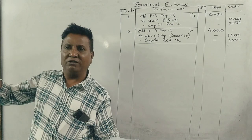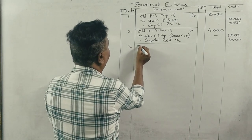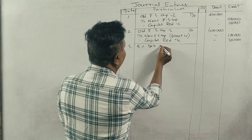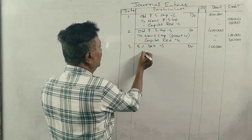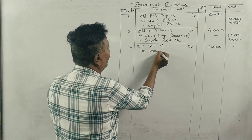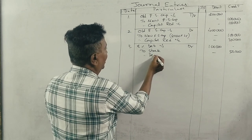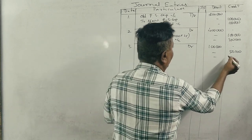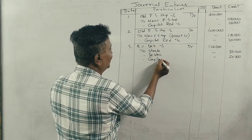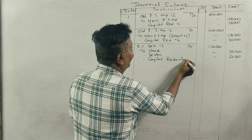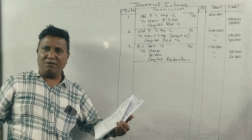The entry is: 8% debentures account debit 1 lakh. Credit to stock 50,000 and debtors 50,000. The narration: being debentures settled completely in full settlement.